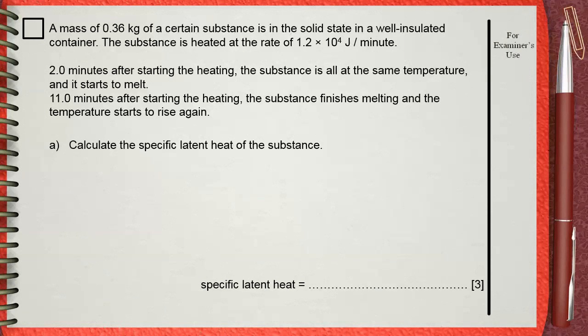A mass of 0.36 kilograms of a certain substance is in the solid state in a well-insulated container. The substance is heated at the rate of 1.2 × 10^4 joules per minute. 2 minutes after starting the heating, the substance is all at the same temperature and starts to melt. 11 minutes after starting the heating, the substance finishes melting and the temperature starts to rise again. Calculate the specific latent heat of the substance.